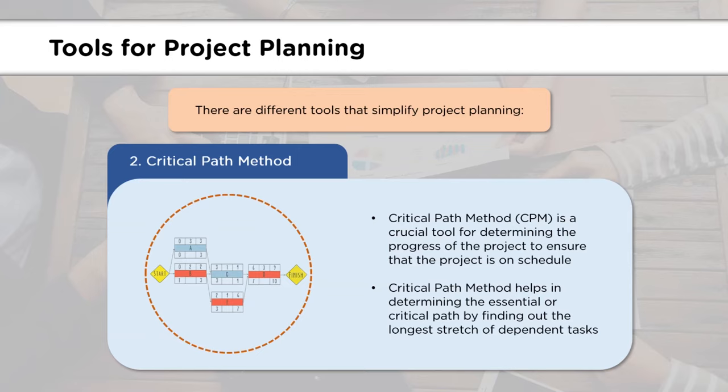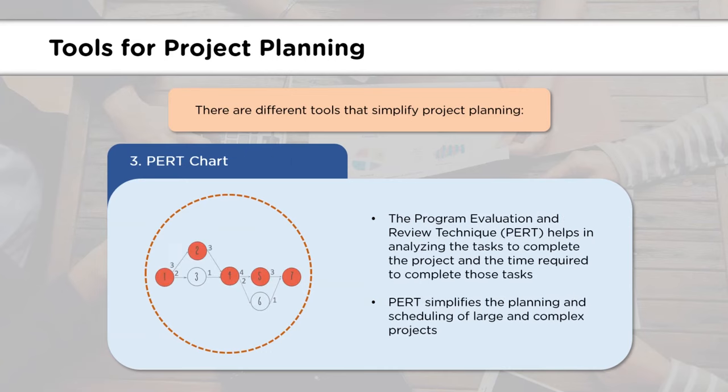The second tool is the Critical Path Method, or CPM. The Critical Path Method helps in scheduling project activities so that the project runs properly. It focuses on the longest stretch of dependent tasks and determines the time needed to complete them. The next tool is Project Evaluation and Review Technique, or PERT. PERT provides a graphical representation of the project's timeline, explaining the interdependencies of different tasks. It helps in making a schedule and coordinating with all team members.